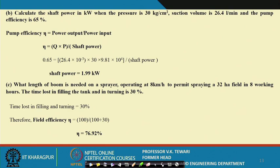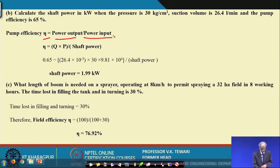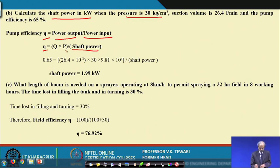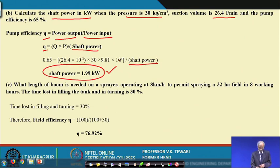For shaft power: pump efficiency equals pump output power divided by pump input power. So efficiency equals Q times P divided by shaft power. The pressure is 30 kg per cm², the volume Q is the calculated suction capacity, and efficiency is 65 percent. Substituting these values, the shaft power in kilowatt can be immediately calculated — it is simply a matter of understanding what is being asked and putting the values into the equation.